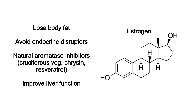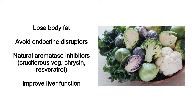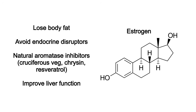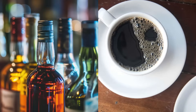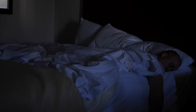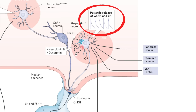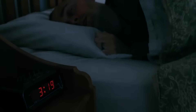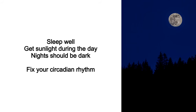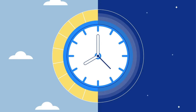You can lower estrogen by reducing body fat, avoiding endocrine disrupting chemicals like plastics, toxic hygiene products, heavy metals, and pesticides. You can also consume natural aromatase inhibitors such as cruciferous vegetables, chrysin, and resveratrol, and improve liver function to help with estrogen excretion. Avoid excessive alcohol or caffeine — alcohol can inhibit GnRH and caffeine can increase cortisol, which suppresses GnRH. Sleep and the circadian rhythm are central because GnRH is released in a pulsatile rhythmic manner controlled by the circadian clock.